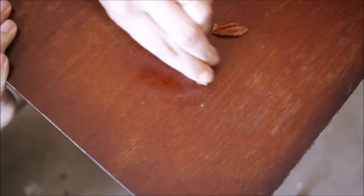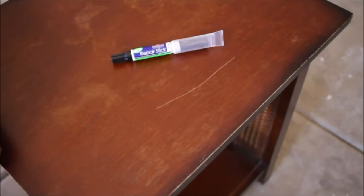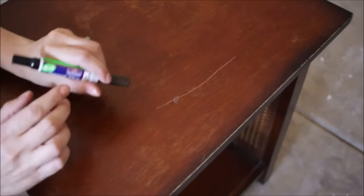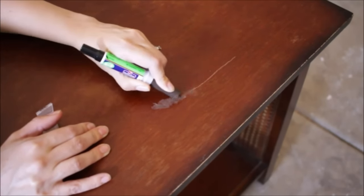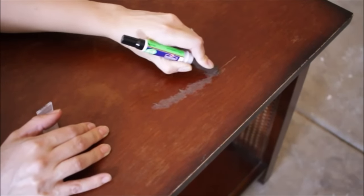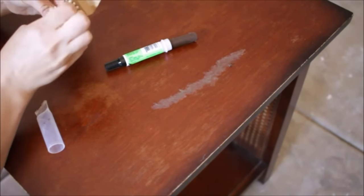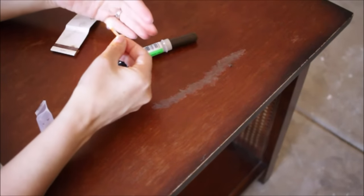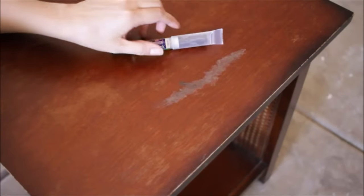You can repair deep scratches or gouges using a fill stick. A fill stick is kind of like a big soft crayon that you rub into the scratch. You might find it easier to apply the fill stick if you've heated the end with a match or a lighter first. Once the scratch is filled, you'll need to scrape off the excess.